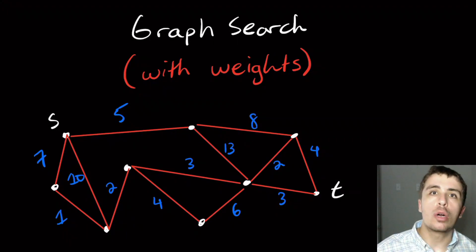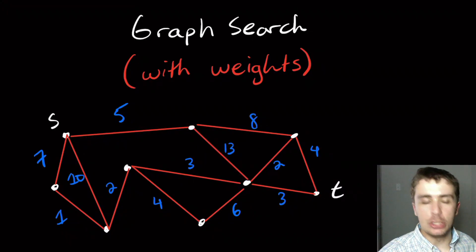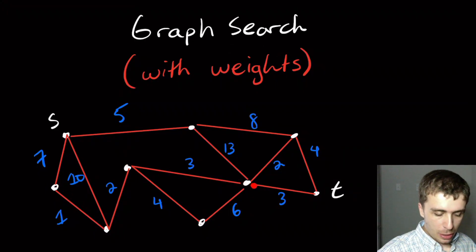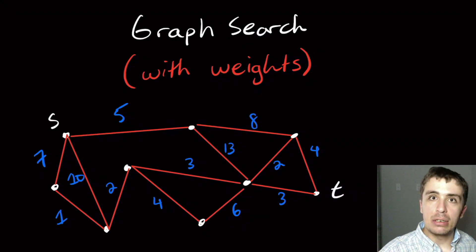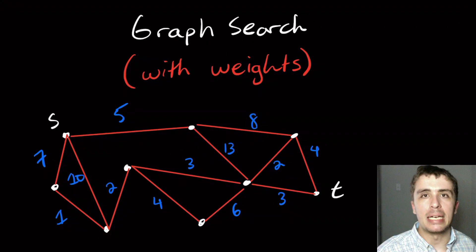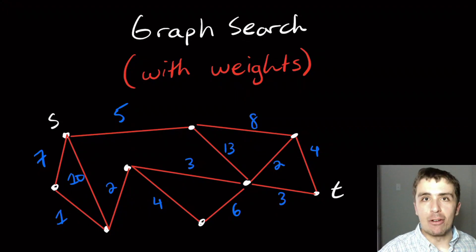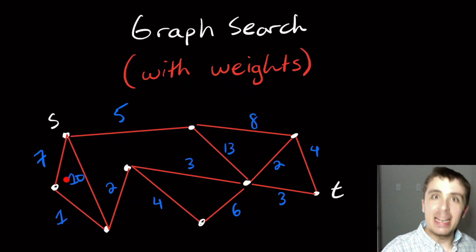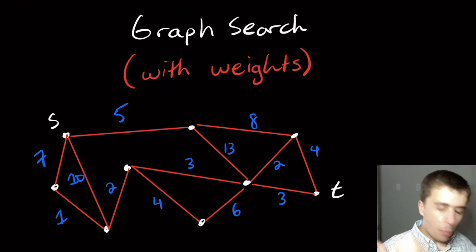The breadth first search algorithm will not work here. For example, this path has a total cost of 21 even though it only has three edges. But if we go along the seven, then the one, then the two, then the three, then the three, that has a total cost of 16 even though it has five edges. So the minimum number of edges is not necessarily the minimum total cost, because the cost can be arbitrary compared to the edge itself. We need some kind of new strategy.